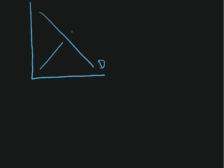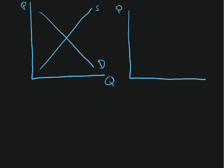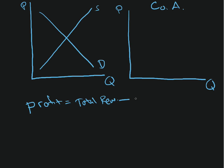Welcome to our third pure competition blackboard discussion. This time we're going to be discussing the market where we have demand and supply, price and quantity, and we're going to look at a particular company in that market. We're going to figure out how this company makes a profit and what that profit is going to be. The economic profit equals total revenue minus total cost — those are the things we're going to chart out.